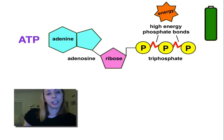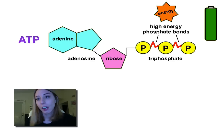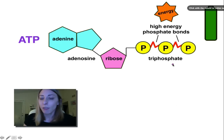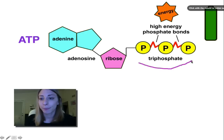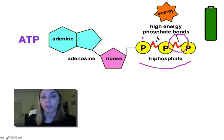We actually call ATP a fully charged battery. The reason is that there is a lot of energy in these three bonds. We are actually going to use the energy in this last bond — the high energy phosphate bond right here.